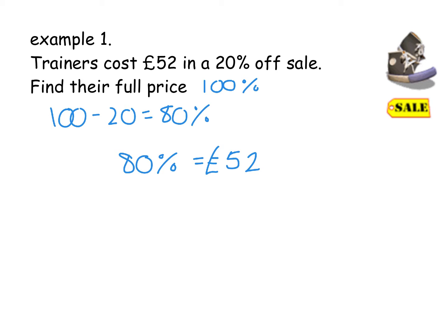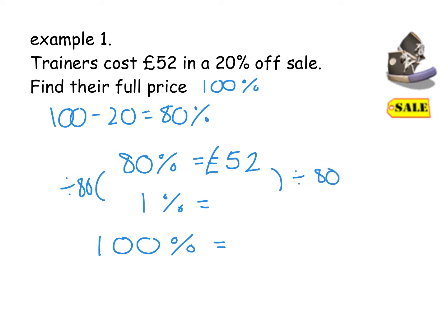So 80% is £52. My aim here is to get what 100% is equivalent to. There is no magic trick for going straight from 80% to 100%, so we have to find 1% in between — that's the proportion method. If you can find what 1% is worth, you can find any percentage you like. So going from 80 to 1, you're dividing by 80. We do the exact same to the £52: 52 divided by 80 gives you 0.65. Then if 1% equals 0.65, you times that by 100, which gives you £65.